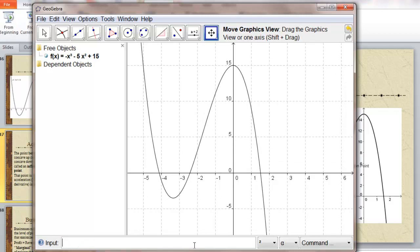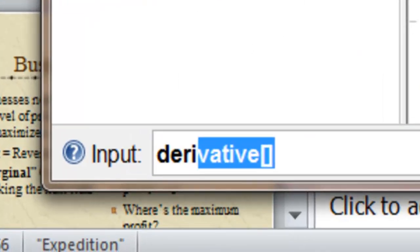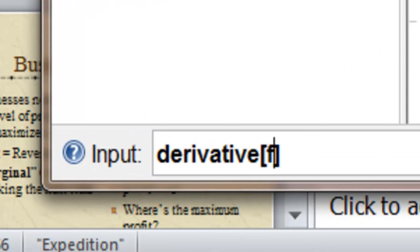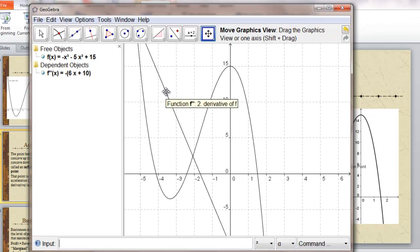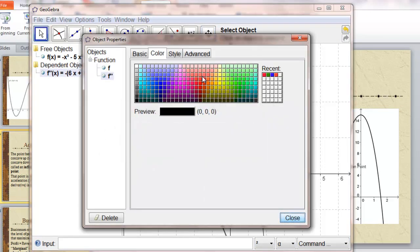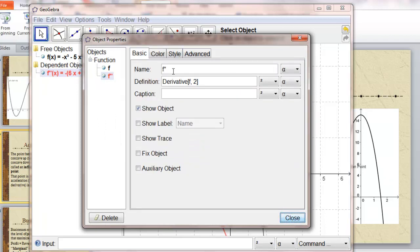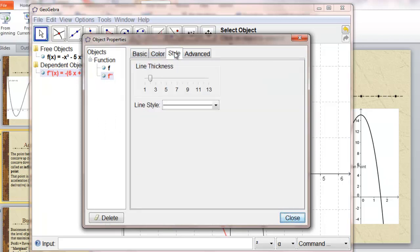We'll find the derivative of f. Might as well make it the second derivative. That's that function. We'll color it red. We'll make it thicker.